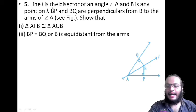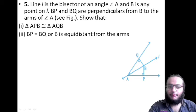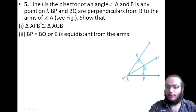It says: Line L is the bisector of an angle A, and B is any point on L. BP and BQ are perpendiculars from B to the arms of angle A.